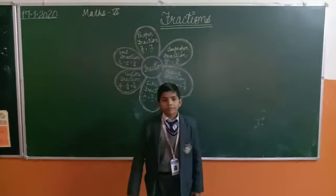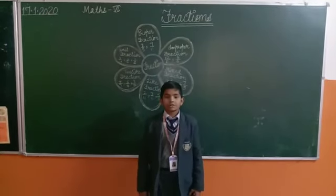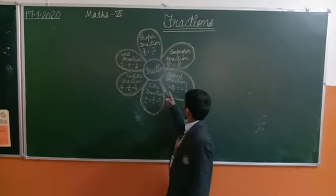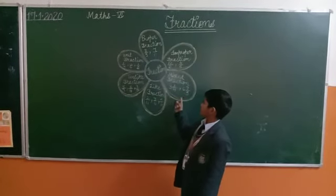Mixed fraction is the combination of a whole number and a proper fraction. Example: 3 and 2 upon 4, 6 and 7 upon 3.